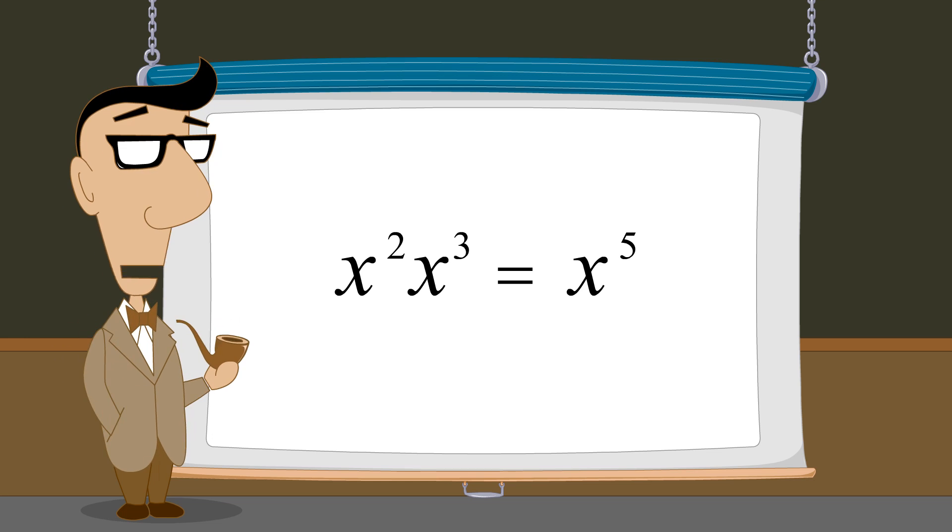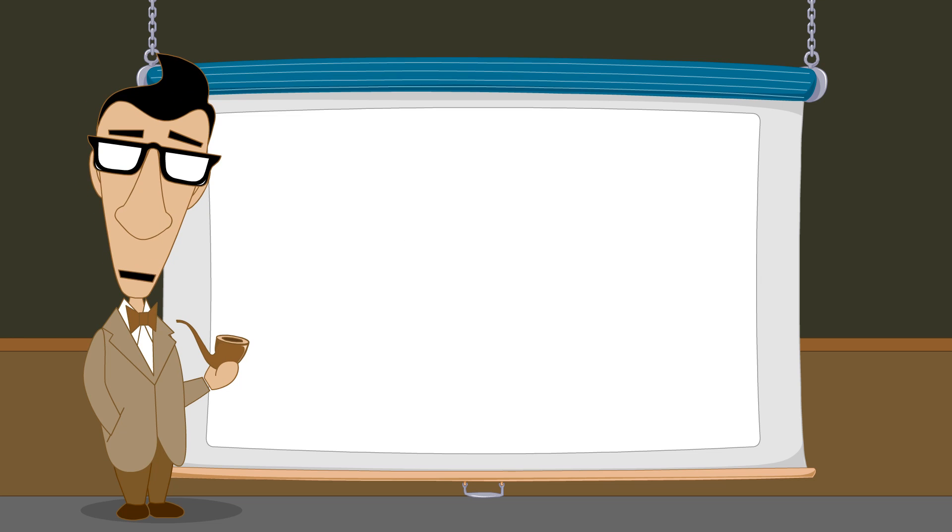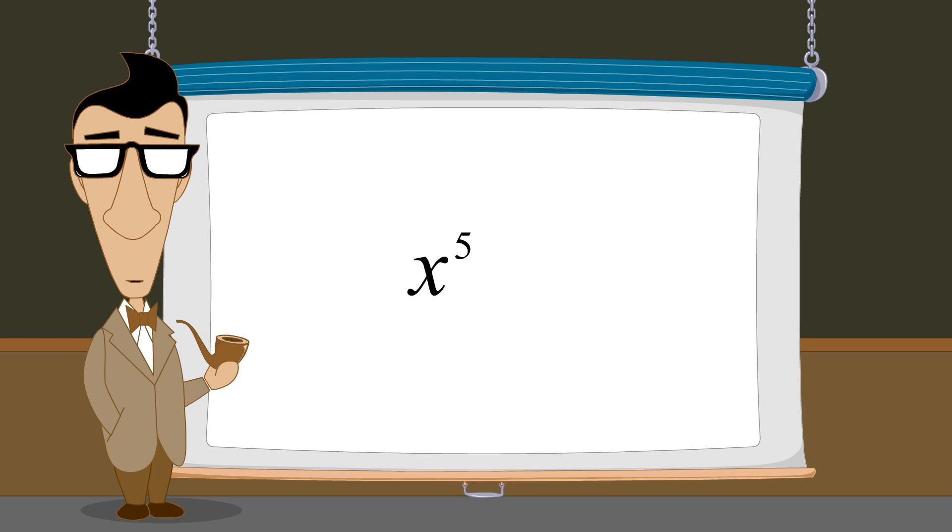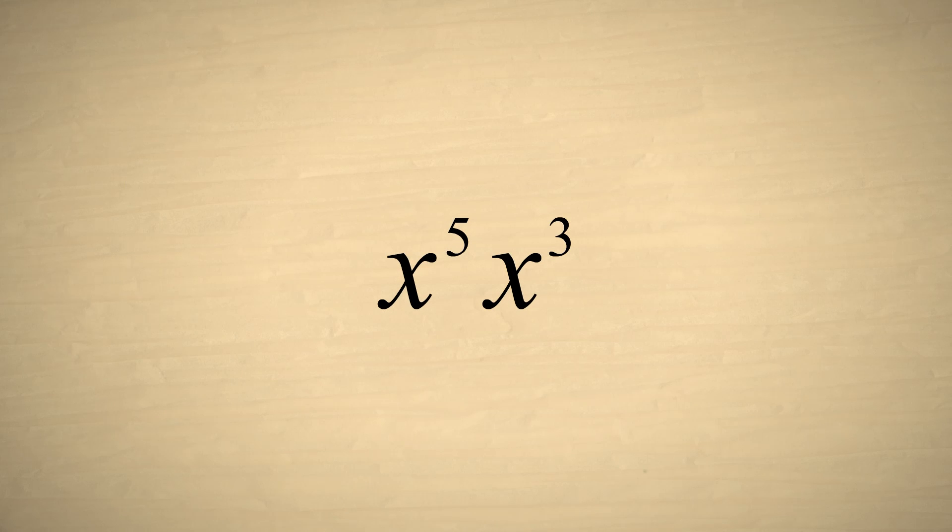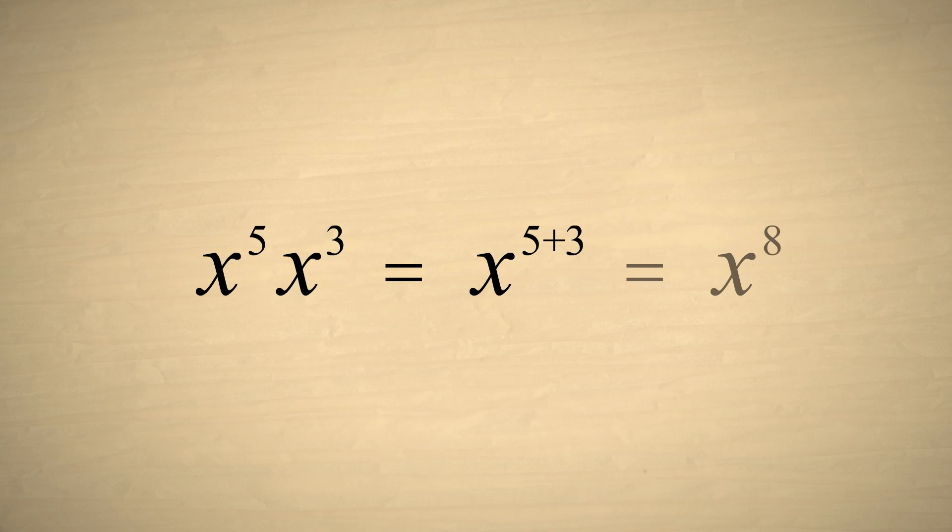Now let's look at some examples of exponential expressions and see if we can write them in a simpler form. In our first example, we have two terms: x to the fifth power and x cubed multiplied together. Since these terms have the same base, x, we can add their exponents. And the result is x to the eighth power.